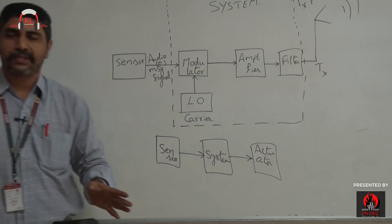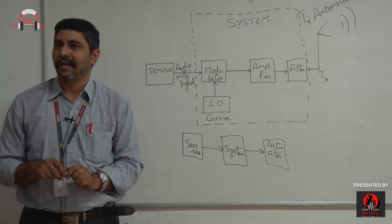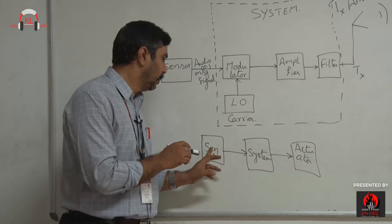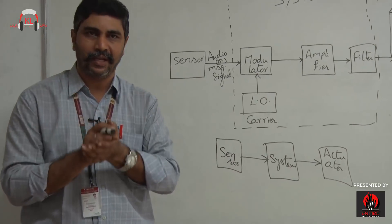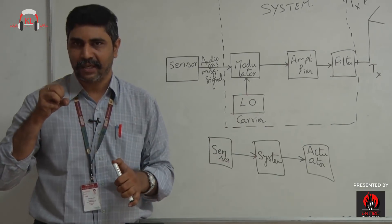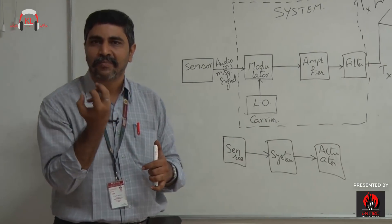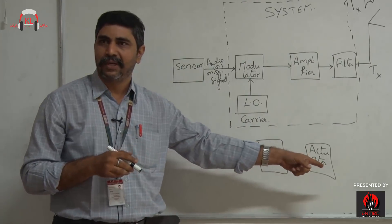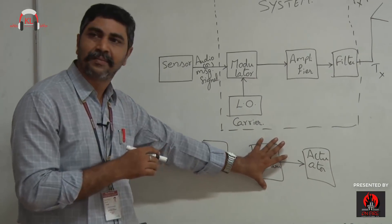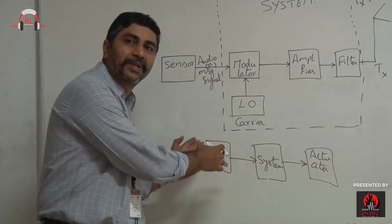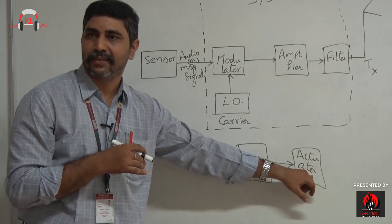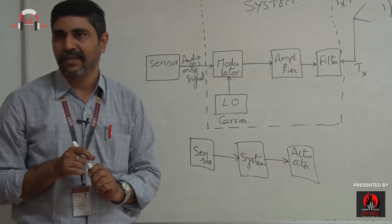Whatever electronic system you take, it falls under a simple block diagram of three blocks: sensor, system, and actuator. Any electronic system can be represented using these three building blocks. A sensor senses the signal because the world is analog in nature. Whatever the world gives you or takes from you will be analog. You have to sense that analog signal, modify or transform it into the desired form, and give it as output through an actuator.